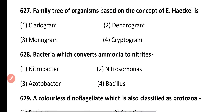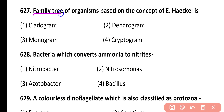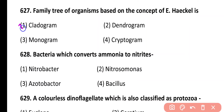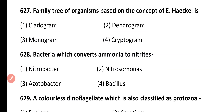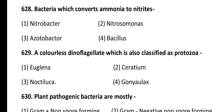Question 627. The family tree of organisms based on the concept of Ernst Haeckel is: cladogram, dendrogram, monogram, cryptogram. Correct answer is option 1. Family tree of organisms based on evolutionary history or evolutionary relationship is known as cladogram.